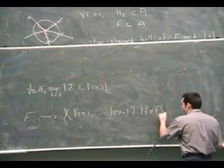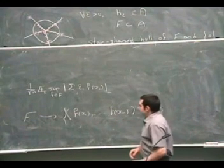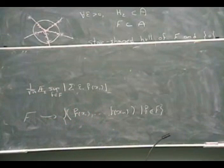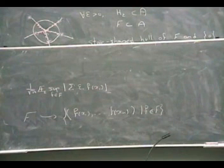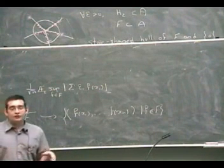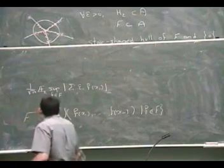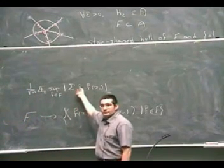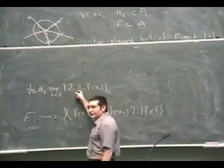For every separate sample, you get this measure of complexity. Now, you're interested in the way your original measure assigns weight over different samples. It could assign a lot of weight to samples for which this is really small, and negligible weight for samples for which this is large. That's where your probability measure on the space comes into the game.